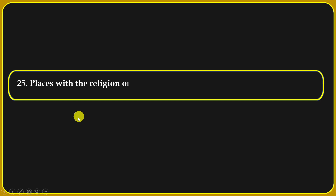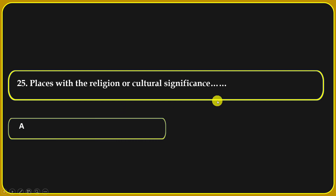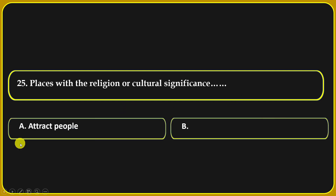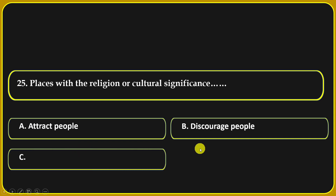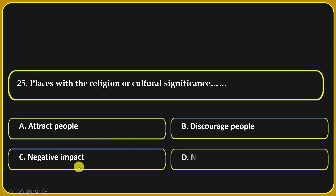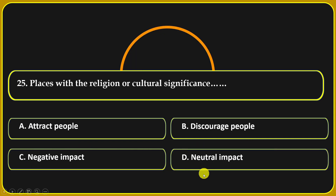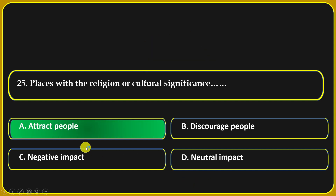Places with religious or cultural significance: attract people, discourage people, have a negative impact, or a neutral impact. Attract people is the correct answer.